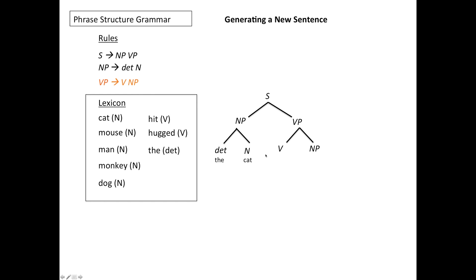It has two constituents according to this rule, verb and noun phrase. And at this point I have a choice and I choose that my verb will be hit and I choose that I now apply this rule.